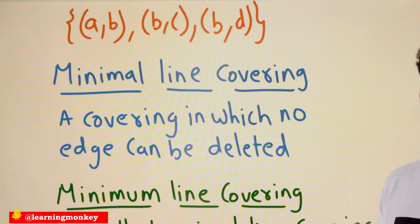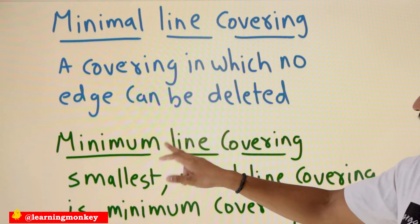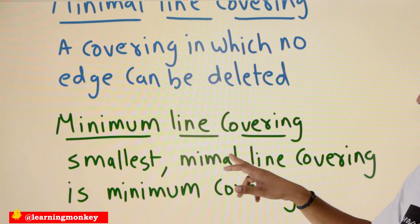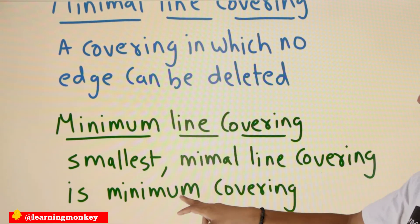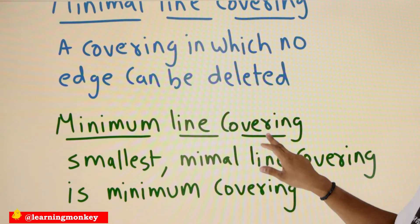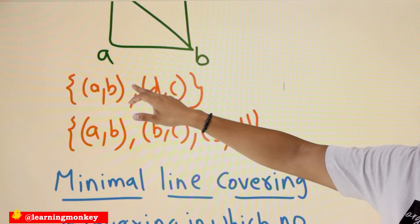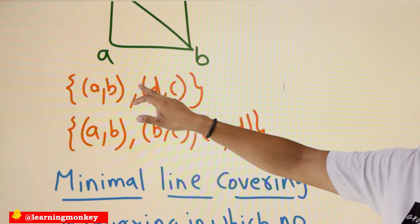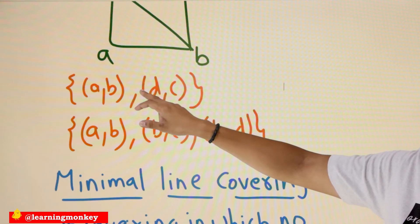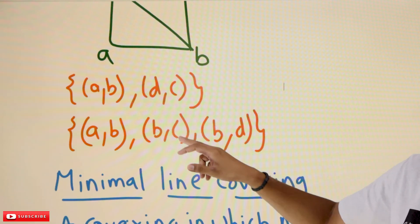So minimal line covering means a covering in which no edge can be deleted. The minimum line covering is the smallest among all minimal line coverings. In our example, {a-b, d-c} with two edges is the smallest, so that is the minimum line covering.